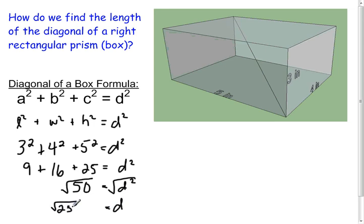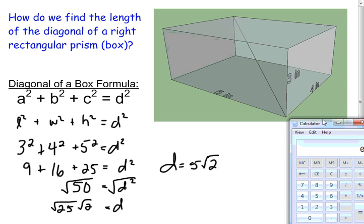So, it's the square root of 25 times the square root of 2. So, the diagonal is 5√2. And if we want an approximate answer, we can pull up our calculator, and we can just go